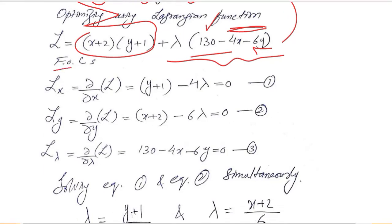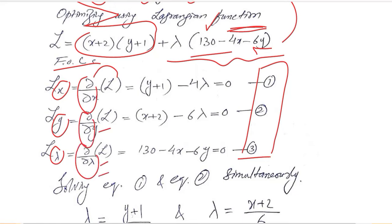First order conditions are calculated depending upon the values of x, y and lambda because these are the three unknowns that we have. These are the three equations that will be formed as a result of taking the derivative of the Lagrangian function with respect to x, y and lambda respectively. This will be the first order condition, this will be the second, and this will be the third.